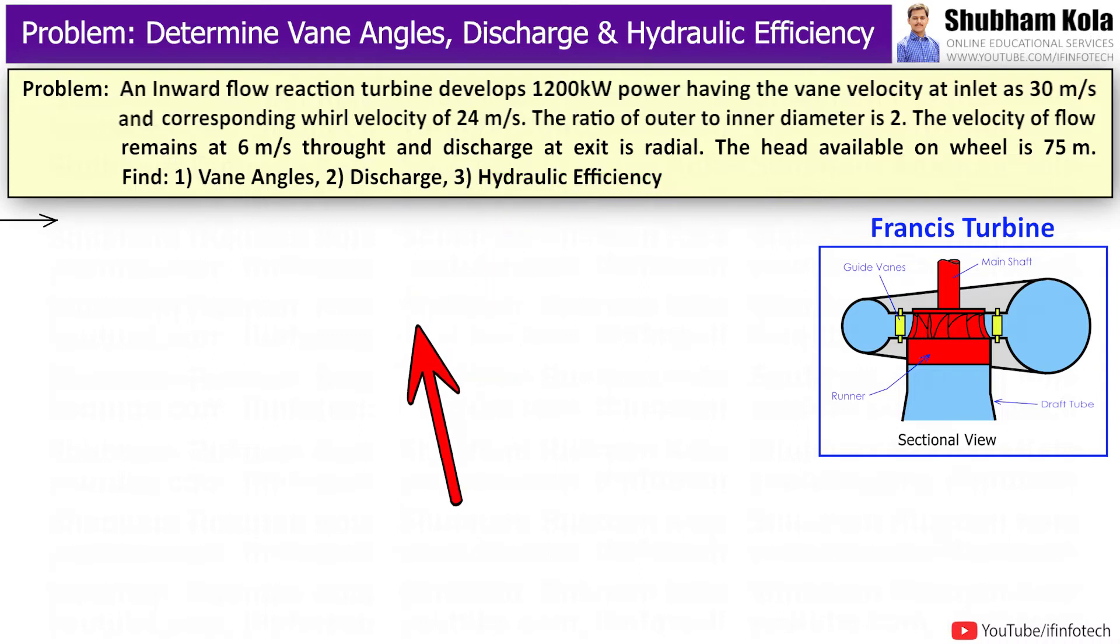So the question is given as: an inward flow reaction turbine develops 1200 kW power, having the vane velocity at inlet as 30 m/s and corresponding wheel velocity 24 m/s.